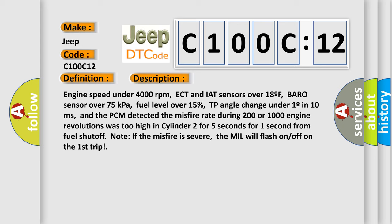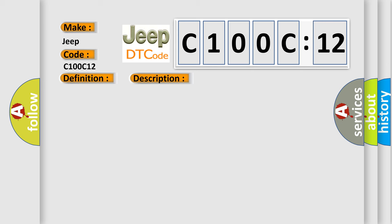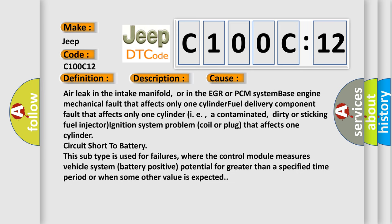This diagnostic error occurs most often in these cases: Air leak in the intake manifold, or in the EGR or PCM system; base engine mechanical fault that affects only one cylinder; fuel delivery component fault that affects only one cylinder, i.e., a contaminated, dirty or sticking fuel injector; ignition system problem coil or plug that affects one cylinder; circuit short to battery. This subtype is used for failures where the control module measures vehicle system battery positive potential for greater than a specified time period or when some other value is expected.